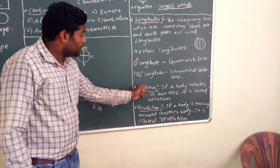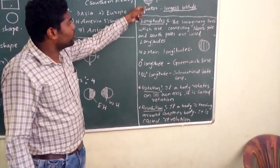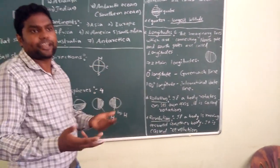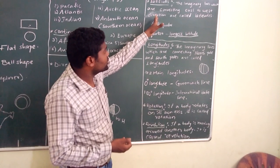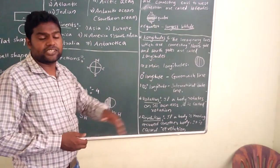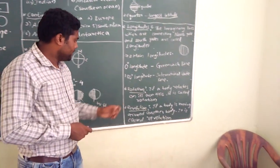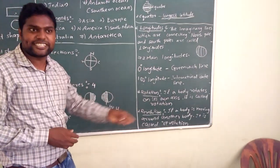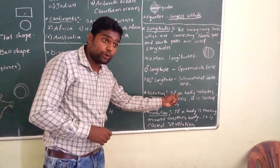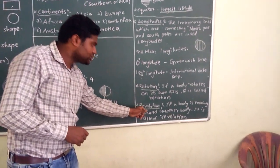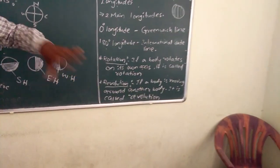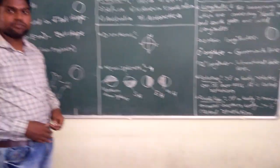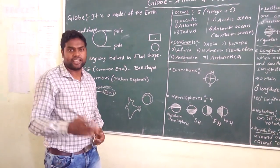Next, we will discuss more about the longitudes and latitudes. We will discuss the scientific reason for making the longitudes and latitudes in the 7th class and 8th class. Rotation: if a body rotates on its own axis, we call it rotation. Revolution: if a body moves around another body, it is said to be revolution. Thank you students, we will discuss remaining topics in the next class.